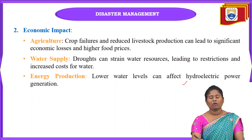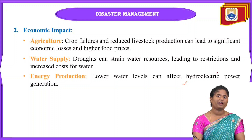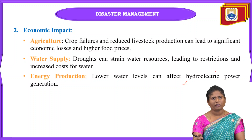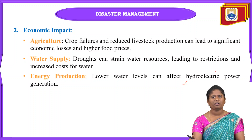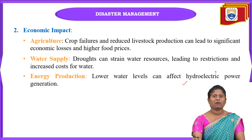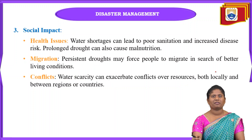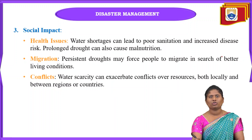Energy production is also affected by droughts. Low water levels impact hydroelectric power generation, since water is the source for generating hydro electric power. If water is not available, power plants cannot function.